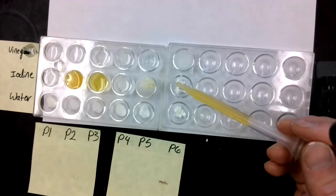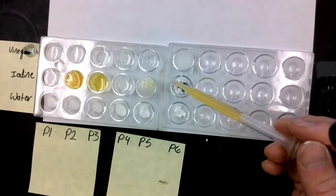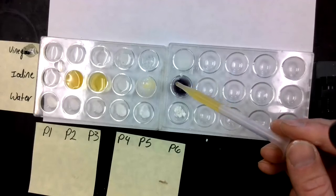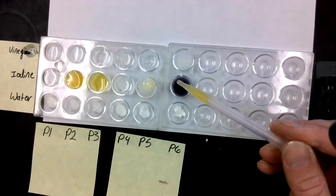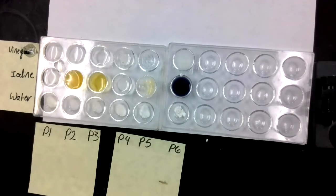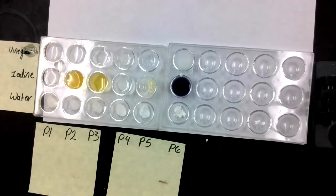And powder six. What color is that? It's like a black, almost purple color. Blackish purple.